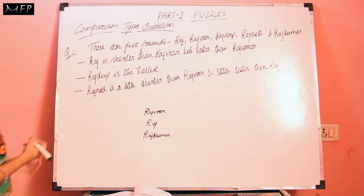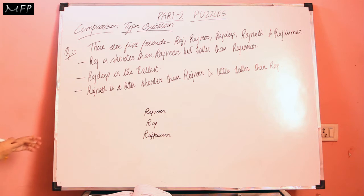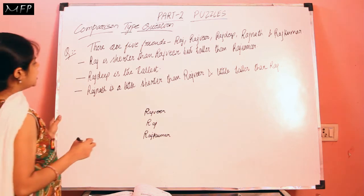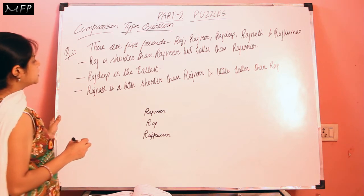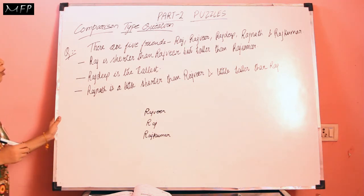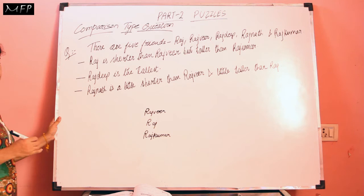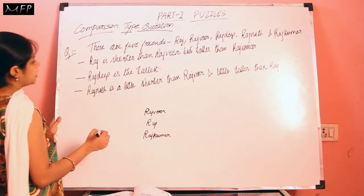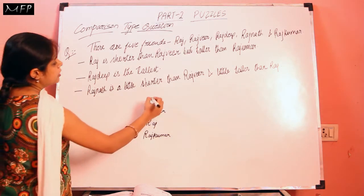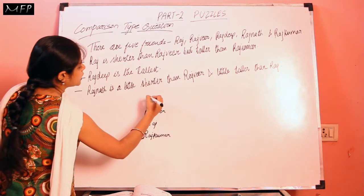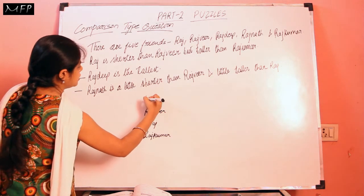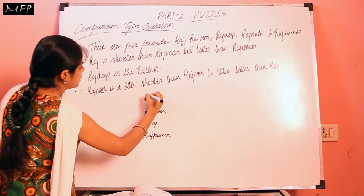Now the second statement is: Rajdeep is the tallest. That means Rajdeep's height is more than any of the friends' heights. So Rajdeep will come in the first place at the very top.